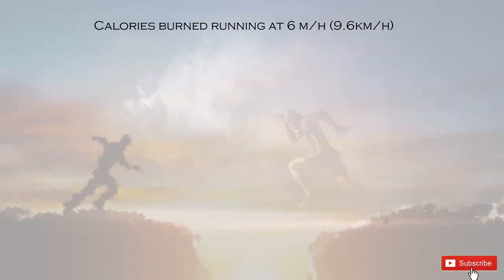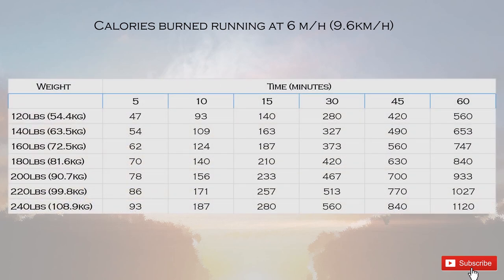This next table shows how many calories you'll burn depending on your time running. The weights are the same as before. We calculated how many calories you'd burn during 5 minutes, 10 minutes, 15, 30, 45, and 60 minutes. Depending on your weight, you can easily navigate this table to see how many calories you'd burn for a certain period of time.